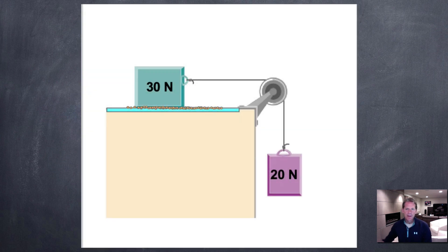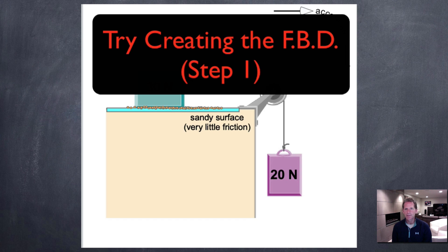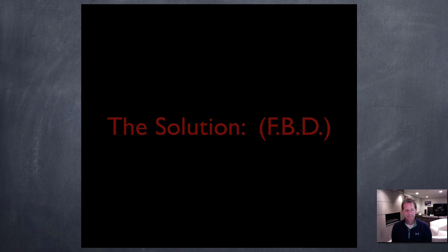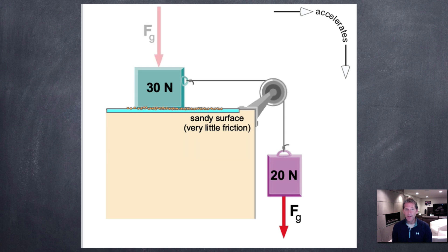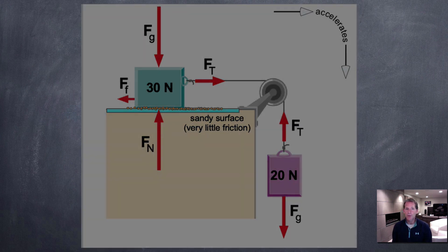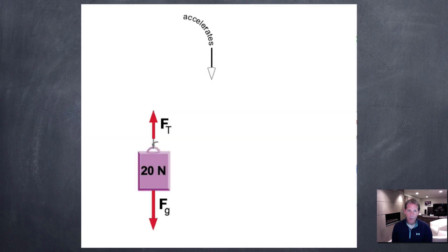Example one: we have two blocks, 20 newtons and 30 newtons, connected by a rope over a pulley. The 30-newton block is on a sandy surface with very little friction. The system accelerates — the 20-newton block accelerates down and the 30-newton block accelerates to the right. We know there's a force of gravity on each mass. The 30-newton mass has a normal force from the table pushing back up, the 20-newton mass has a force of tension from the rope, and there's a very small force of friction on the 30-newton block.